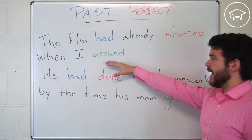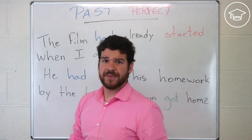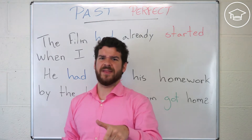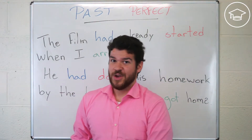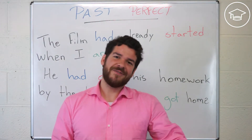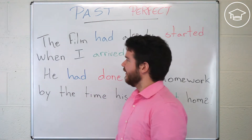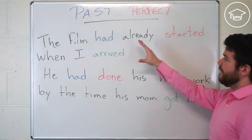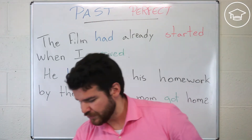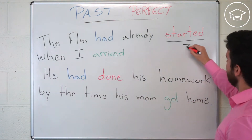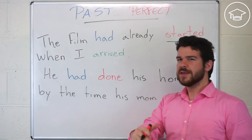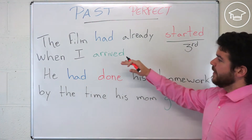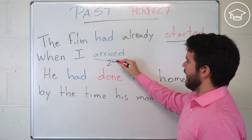The film had already started when I arrived, which means I arrived there and the film had already begun. We don't use present perfect in this case because I'm talking about something in the past. 'Started' and 'begun' — remember the third column? That's the past participle form.